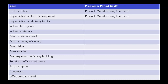Now, depreciation on delivery trucks. Delivery trucks are not part of the manufacturing process — they're not in the factory. They deal with the product once it's already made, so depreciation on delivery trucks would be a period cost. Next: indirect factory labor. Indirect factory labor is inside the factory, so it's a product cost. You'll notice it's manufacturing overhead because it's indirect and not direct.